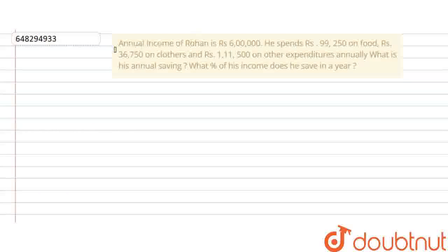Question is: Annual income of Rohan is Rs. 6,00,000. He spent Rs. 99,250 on food, Rs. 36,750 on clothes, and Rs. 1,11,500 on other expenditures annually. So, what is his annual saving and what percent of his income does he save in a year?